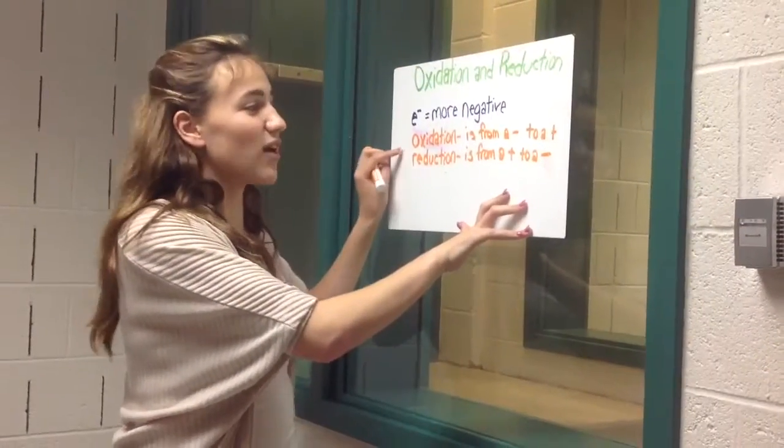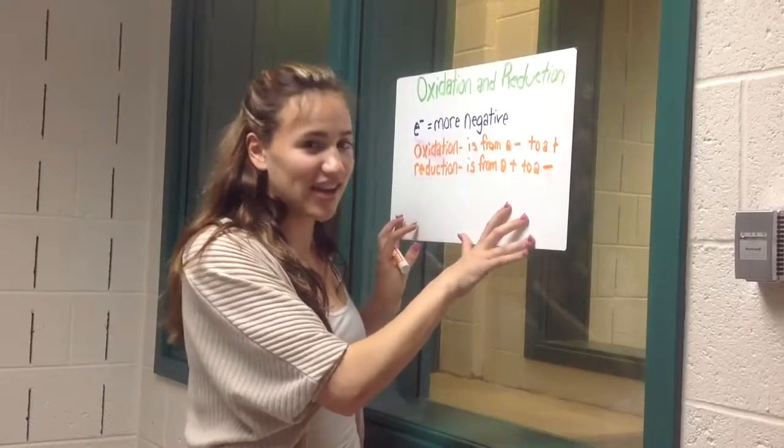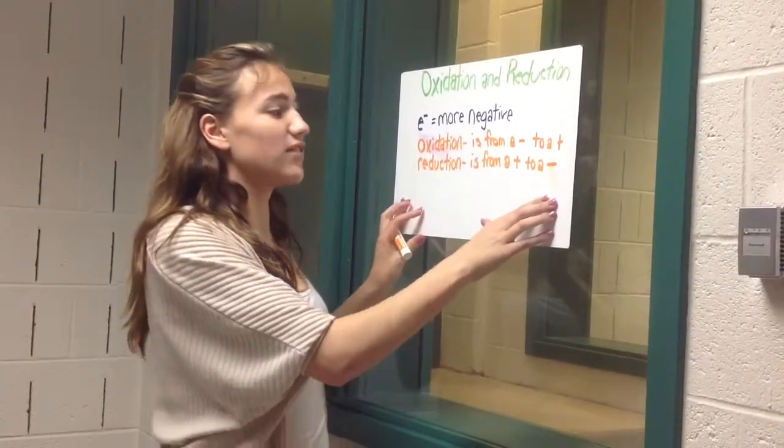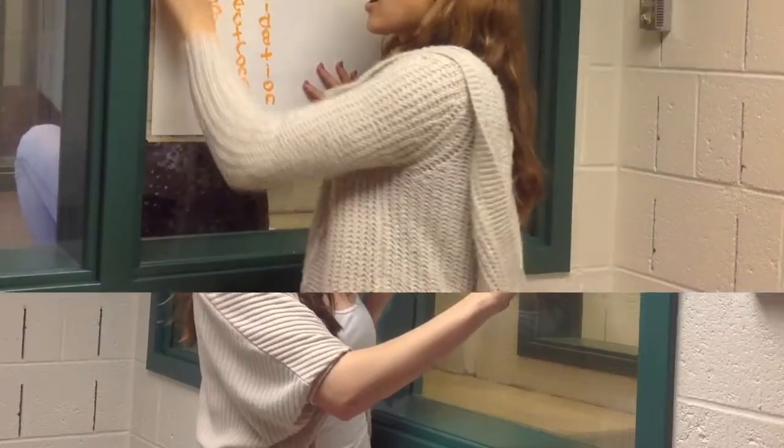Electrons like to be more negative, so oxidation is when it goes from a negative to a more positive charge. And reduction is when it goes from a positive to a more negative charge.